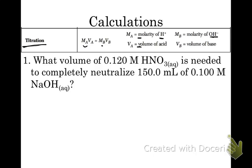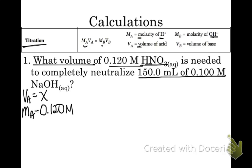So let's figure out what we have, or what information we have. We want to figure out the volume, so because it says what volume, that's our unknown. So the volume of, in this case, HNO3 is your acid. So this is your unknown. You know the molarity of your acid, so the molarity of the acid is 0.120 molar. We have here 150.0 mL of 0.100 molar NaOH. So this is your base. So you have your volume of your base is 150 mL.